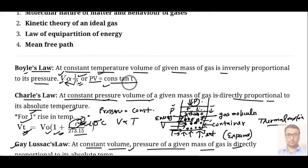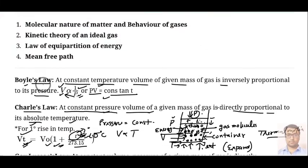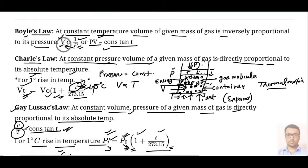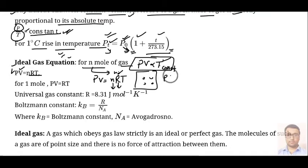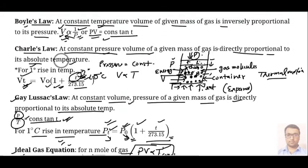From the ideal gas equation, you can derive Boyle's law: at constant temperature T, PV is constant. PV depends on temperature, but if T is constant, PV is proportional to a constant. So PV is constant. Similarly, Charles' law says volume is proportional to temperature at constant pressure, which follows from the gas equation when P is constant, giving volume directly proportional to temperature.